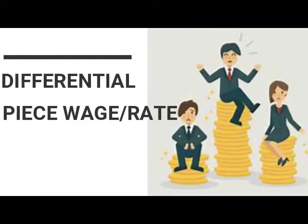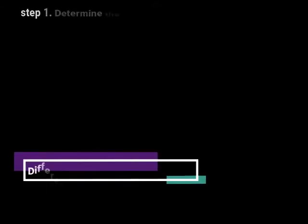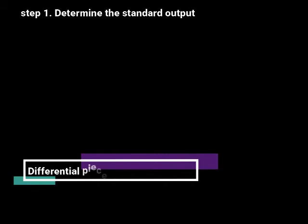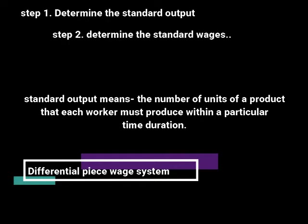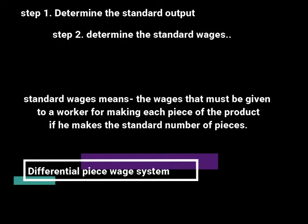Now, let's understand the concept of the differential piece wage system. According to this system, a standard output can be determined that should be produced within a particular time. First of all, we will determine that in a particular time period, one worker can produce a certain amount. This is called standard output or standard performance. The wages of a worker are decided according to per piece of output, and this is called standard wages.